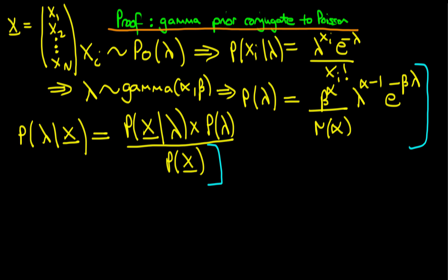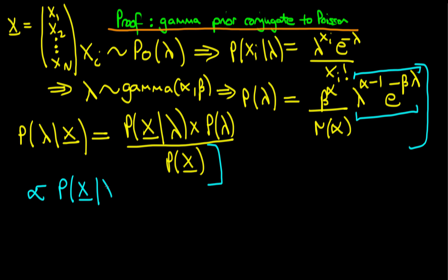Because what we're really trying to show is that in the posterior distribution we have a kernel which is of similar form to that in our prior distribution. So all we really care about are those terms which depend on lambda. What we can do is rewrite this posterior distribution as being proportional to the likelihood — the probability of x given lambda — times the prior, the probability of lambda.